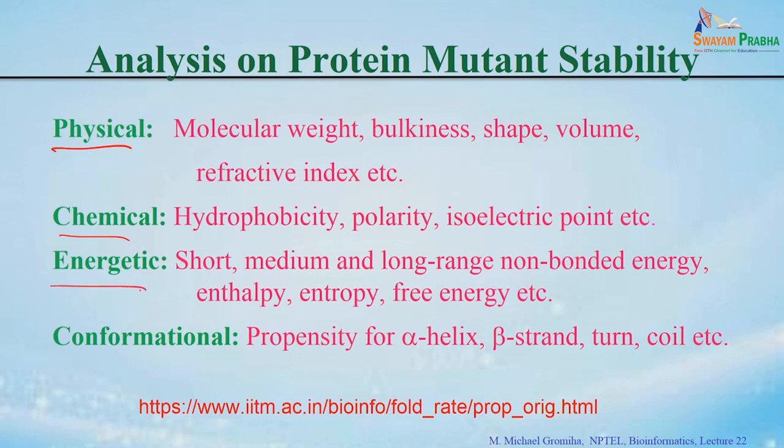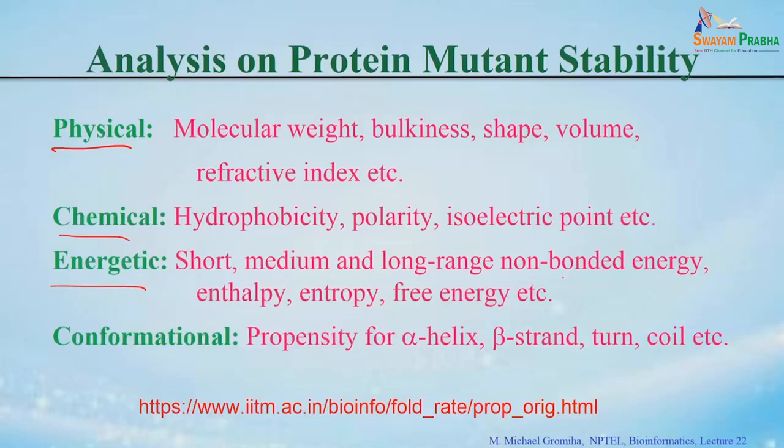There are energetic properties such as short-range interaction energy — how two residues are in contact based on short-range, medium-range, or long-range interactions. The frequency of occurrence of these residues compared with all residues within that range can be converted into potentials and from these you can get the energy. Likewise, you can get the enthalpy, entropy, and free energy for each residue.